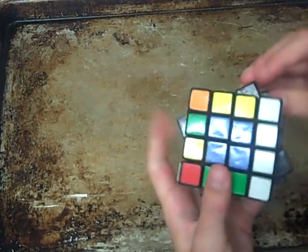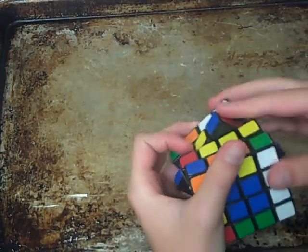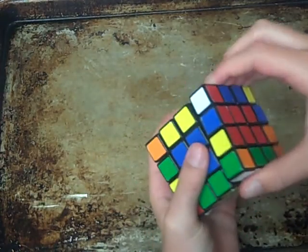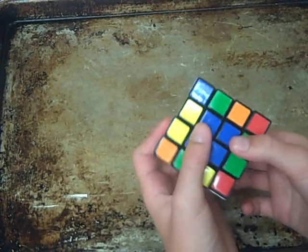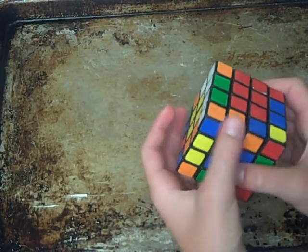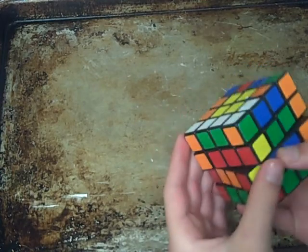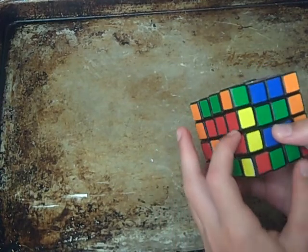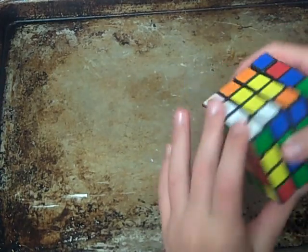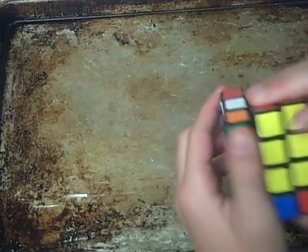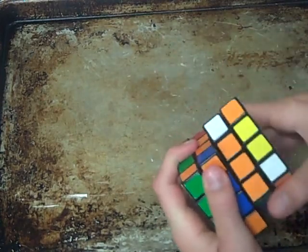Or, what you can do instead, is do a 2R. And, then when you match it up, do a 2U star. And, that'll match it up. And, when you realign the centers, do a 2U star again.